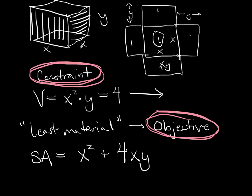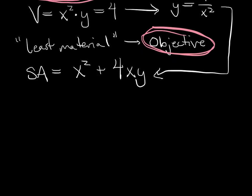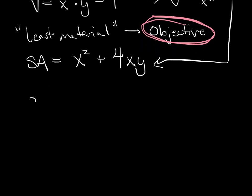In this case, I'm going to solve for y. Y is four over x squared, and I'm going to put that here. So now, what do I have? I have surface area is equal to x squared plus 4x times 4 over x squared.